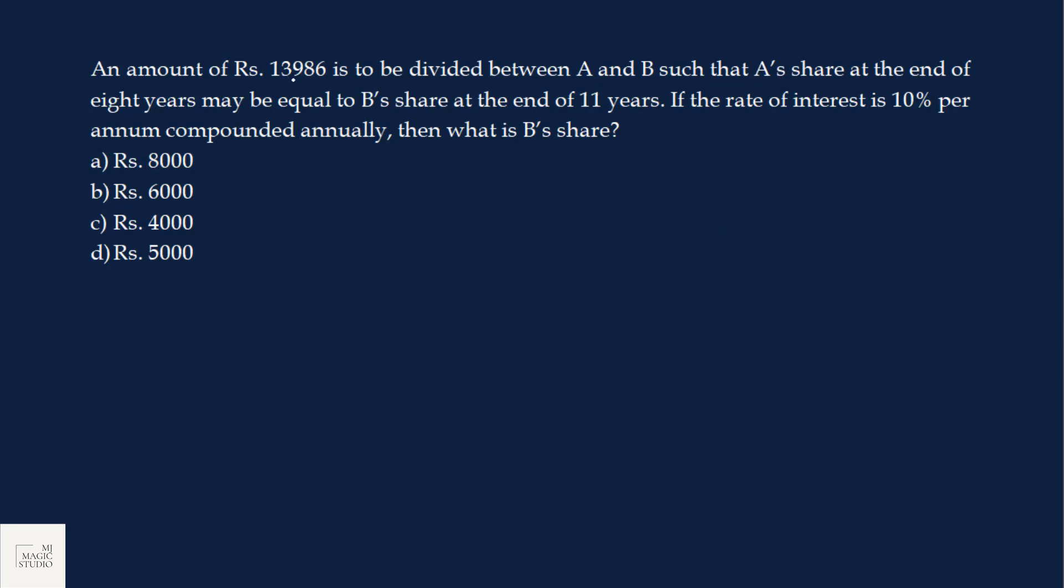An amount of Rs. 13986 is to be divided among A and B such that A's share at the end of 8 years may be equal to B's share at the end of 11 years. If the rate of interest is 10% per annum compounded annually, then what is B's share? Let A's share is A and B's share is B. Then we know that A plus B is 13986.